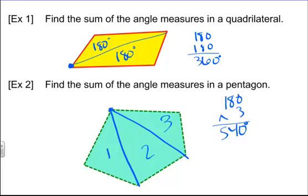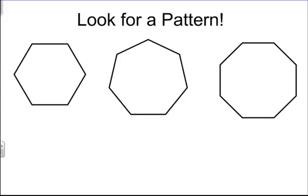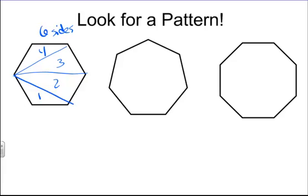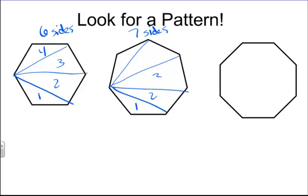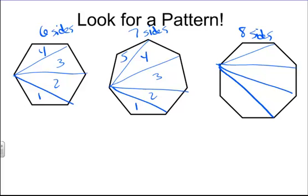Let's see if we can find a pattern. A hexagon has 6 sides and forms 4 triangles. A heptagon has 7 sides and forms 5 triangles. An octagon has 8 sides and forms 6 triangles. There's a pattern: 6 sides → 4 triangles, 7 sides → 5 triangles, 8 sides → 6 triangles. The number of triangles is always 2 less than the number of sides.